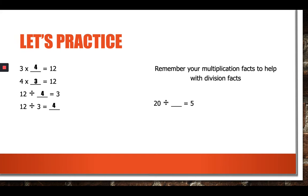Think about 20 divided by what number equals five. So we can also think of it five times what number equals 20. So 20 divided by four equals five.